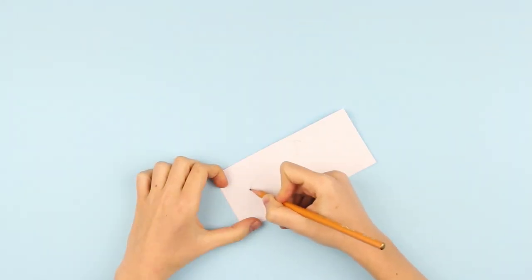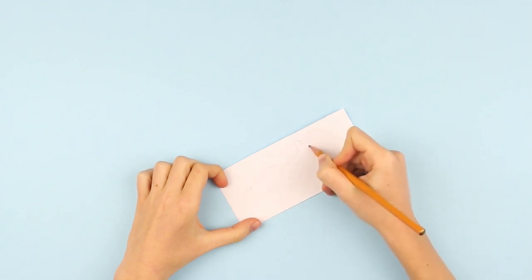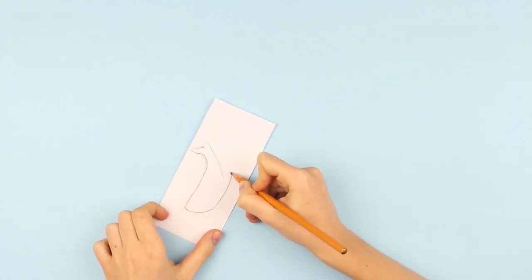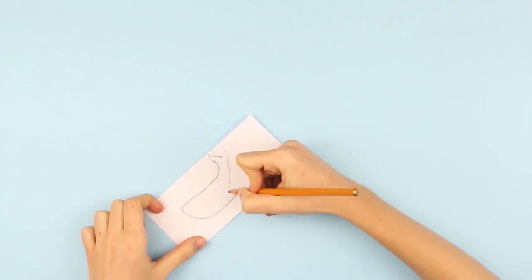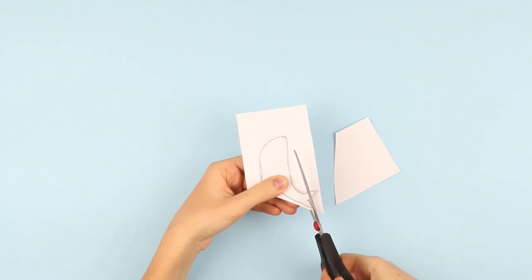Prepare a pattern. Draw a whale outline on thick paper. Make the silhouette recognizable. It resembles a tailed drop. Cut it out with scissors.